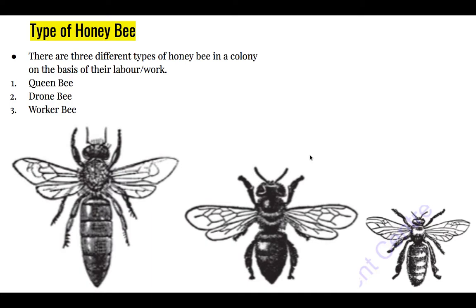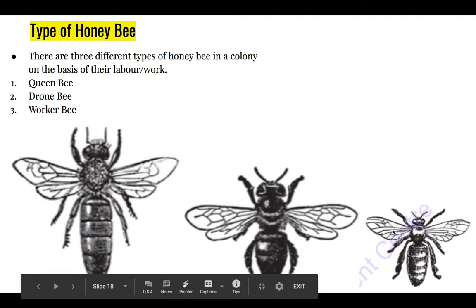In a beehive there are three types of honeybees, and this categorization has been done on the basis of their work. The queen bee is the largest bee in a hive, the drone bee is middle-sized, and the worker bee is the smallest one in the beehive.